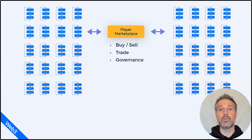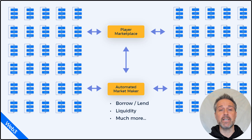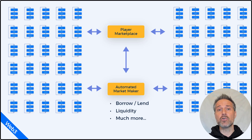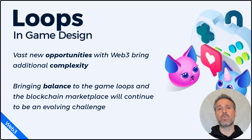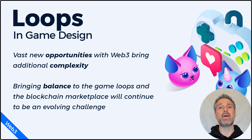Now imagine thousands of concurrent users, each exploring their own game loop and periodically interacting with that blockchain together. They're making purposeful choices to further their own game development and build out that ecosystem. In addition to that player marketplace, we could expand it even further. If that universe or game ecosystem has automated market makers — algorithms that are out there running and assisting new types of operations, borrowing and lending items to the players, adding liquidity in the world — that gives a more fast and responsive experience. The vast new opportunities of Web3 bring additional complexity, and it's an evolving challenge for us as game designers to figure out how best to balance that ecosystem across all those user types and game loops.